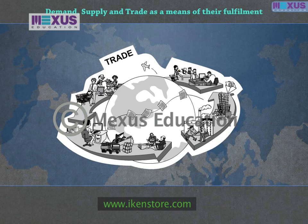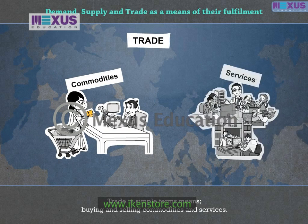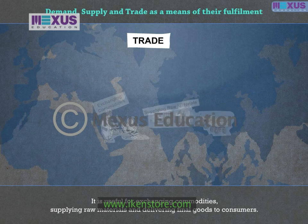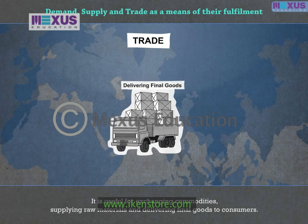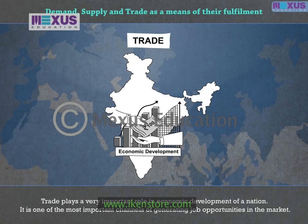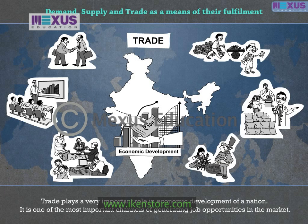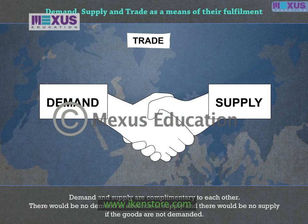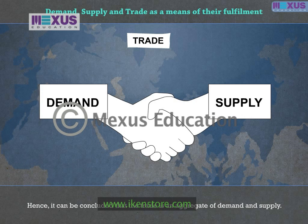Now let us understand the role played by trade as a means of fulfillment of demand and supply in the market. Trade in simple terms means buying and selling commodities and services. It is useful for exchanging commodities, supplying raw materials, and delivering final goods to consumers. Trade plays a very important role in the economic development of a nation and is one of the most important channels of generating job opportunities. Demand and supply are complementary to each other — there would be no demand in the absence of supply, and no supply if goods are not demanded. Hence, trade is an aggregate of demand and supply.